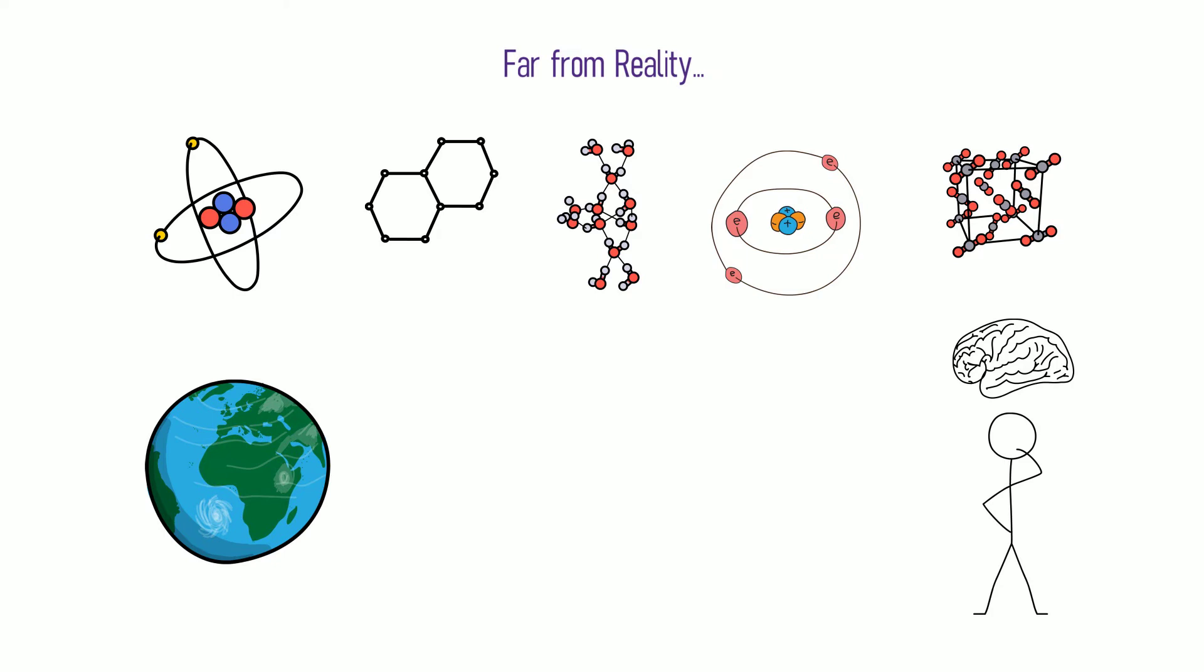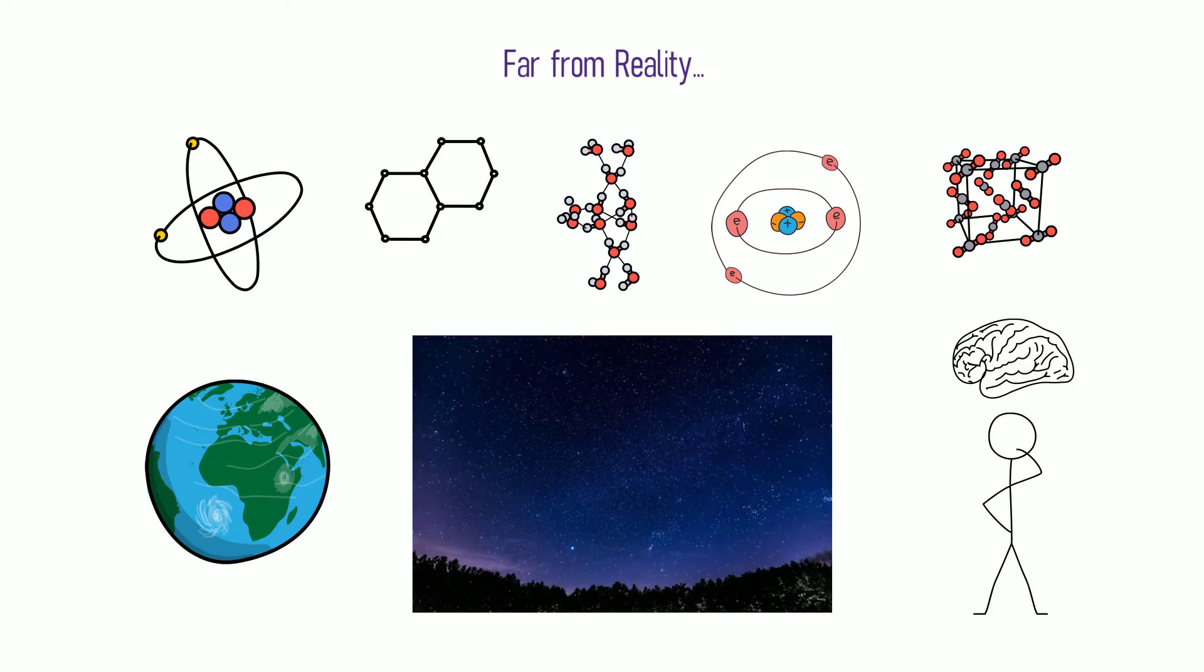Our world is much smaller but also much bigger than most of us think. On one hand, there is an incredibly minuscule world of atoms and molecules. On the other hand, we can see a gigantic world of stars and galaxies. Let us start with the first group: the smallest objects of the cosmos.